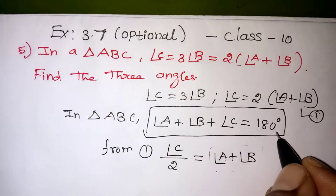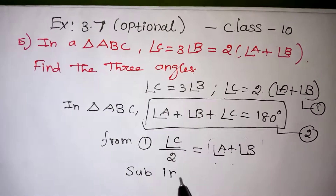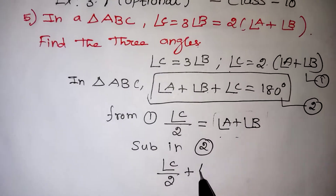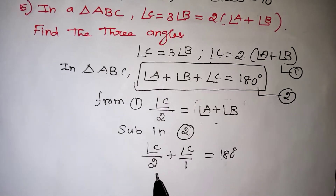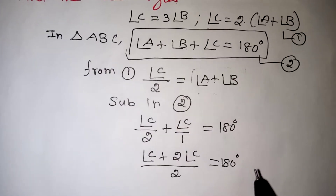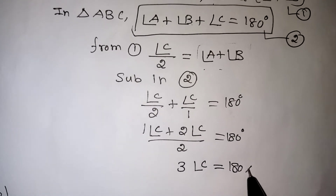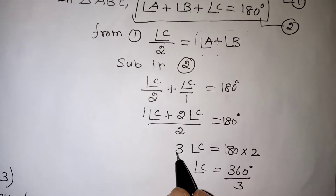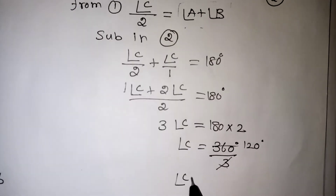Angle A plus angle B plus angle C equals 180 degrees — that is our second equation. Now substitute into the second equation: replace A plus B with C divided by 2. So angle C by 2 plus angle C equals 180 degrees. Taking LCM: angle C plus 2 times angle C, divided by 2, equals 180 degrees. So 3 times angle C equals 360 degrees, giving angle C equals 120 degrees.